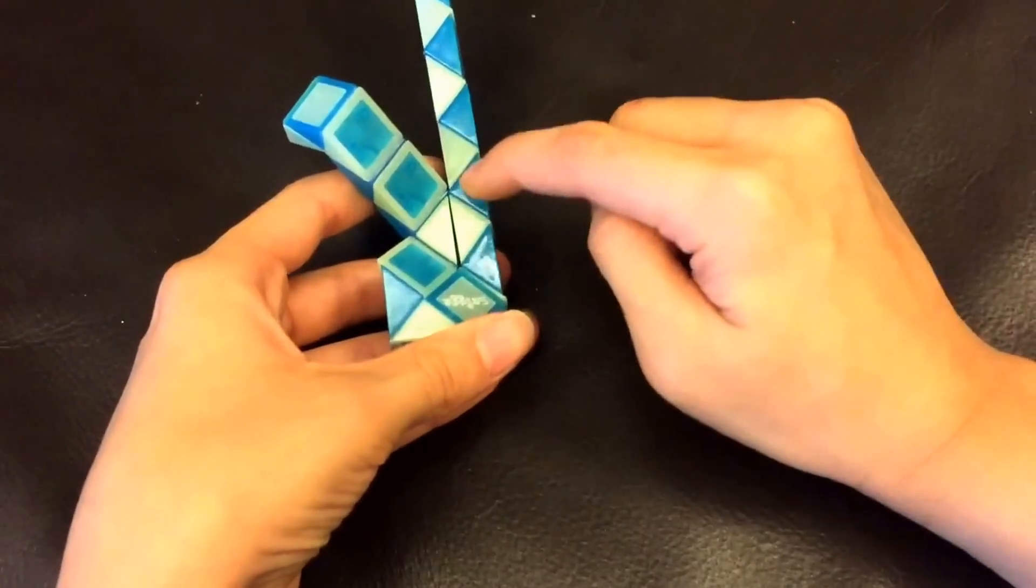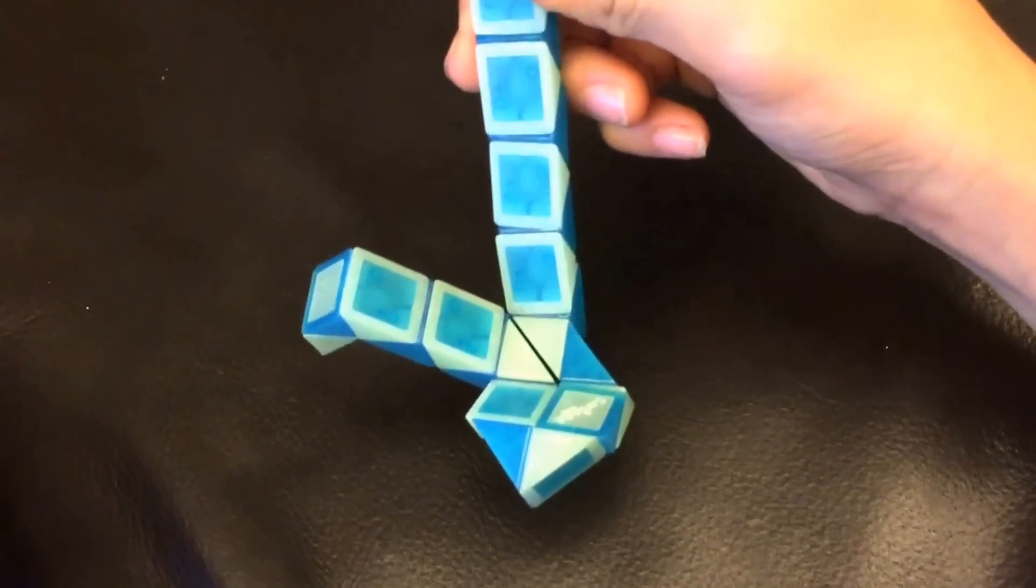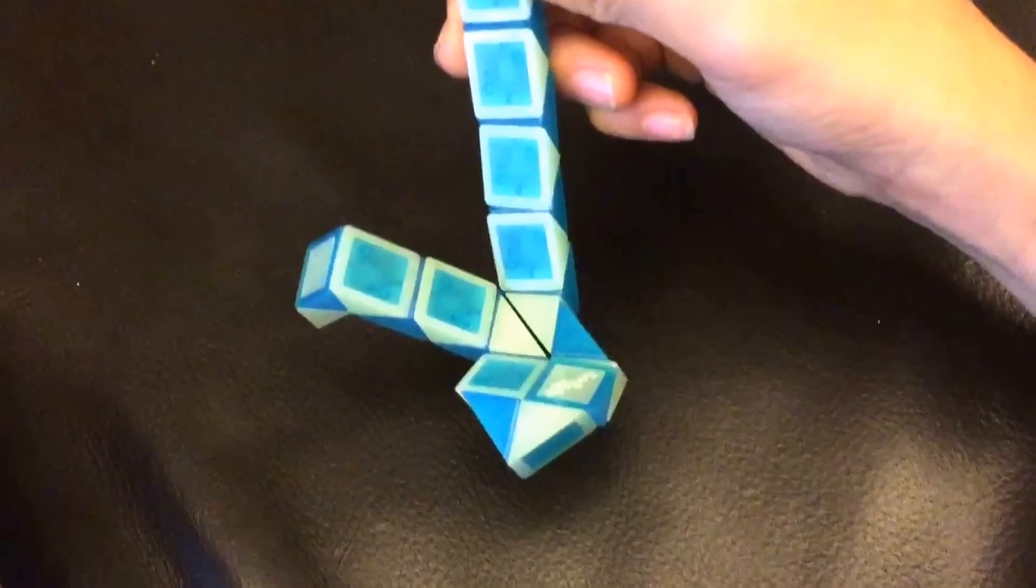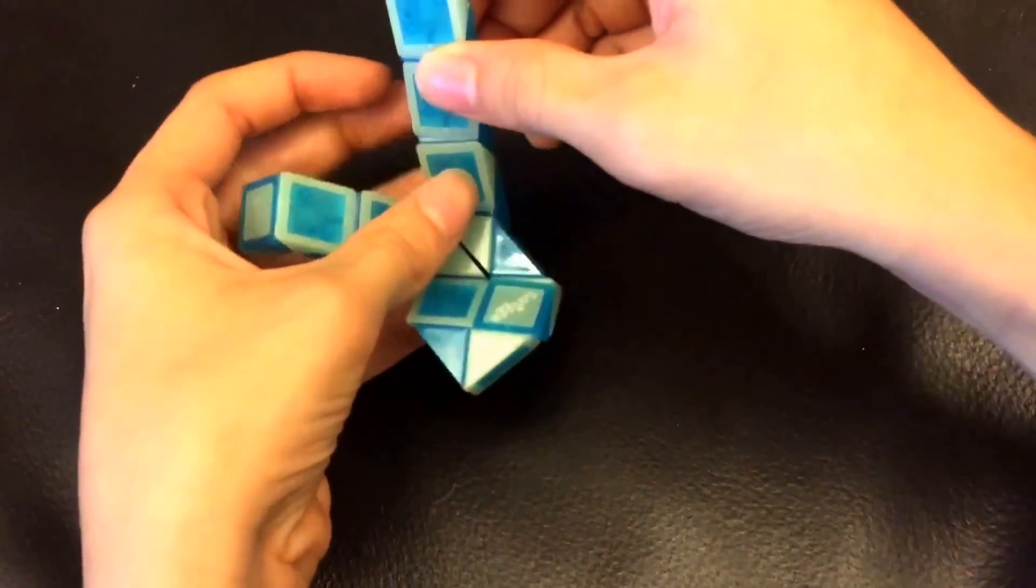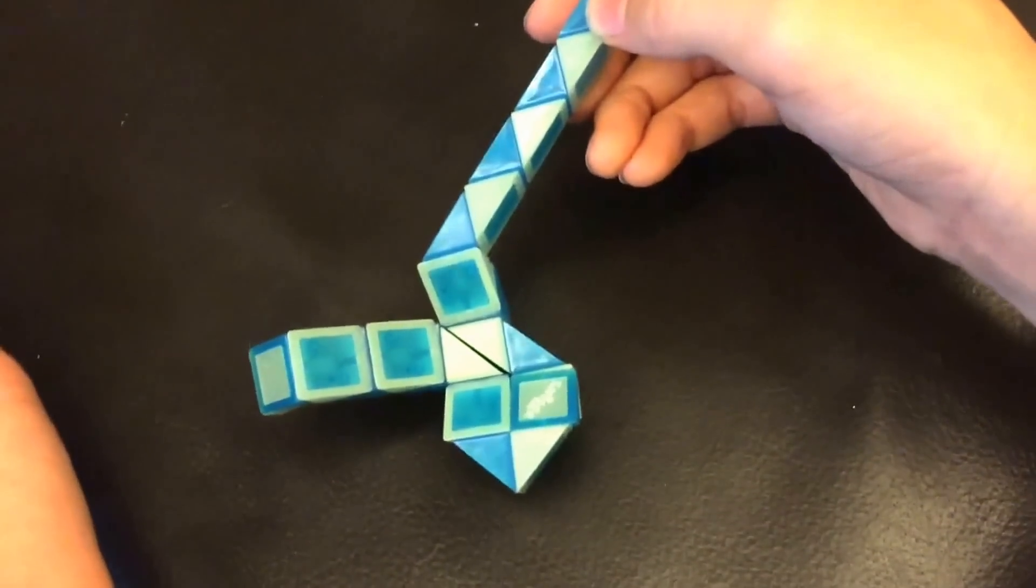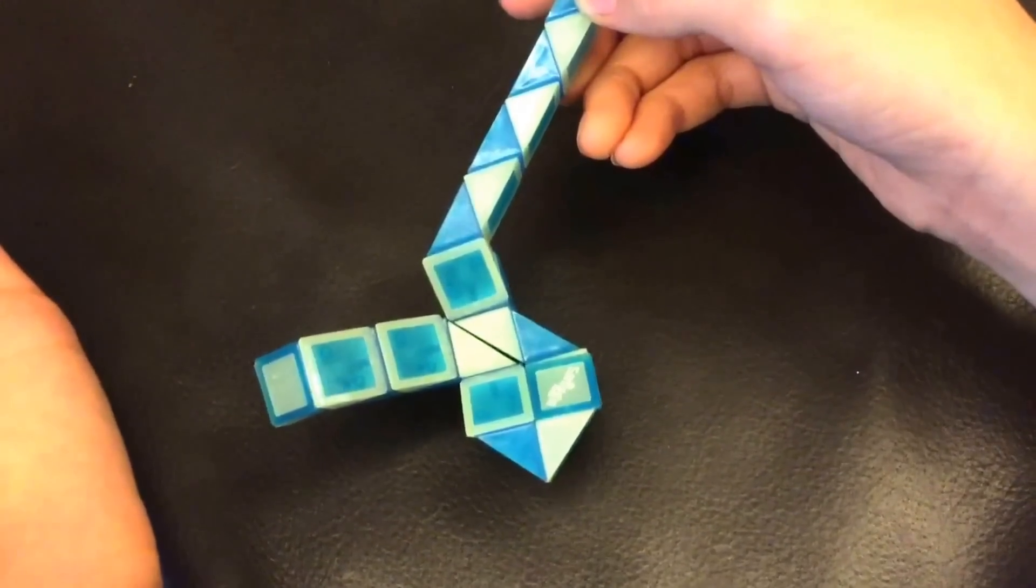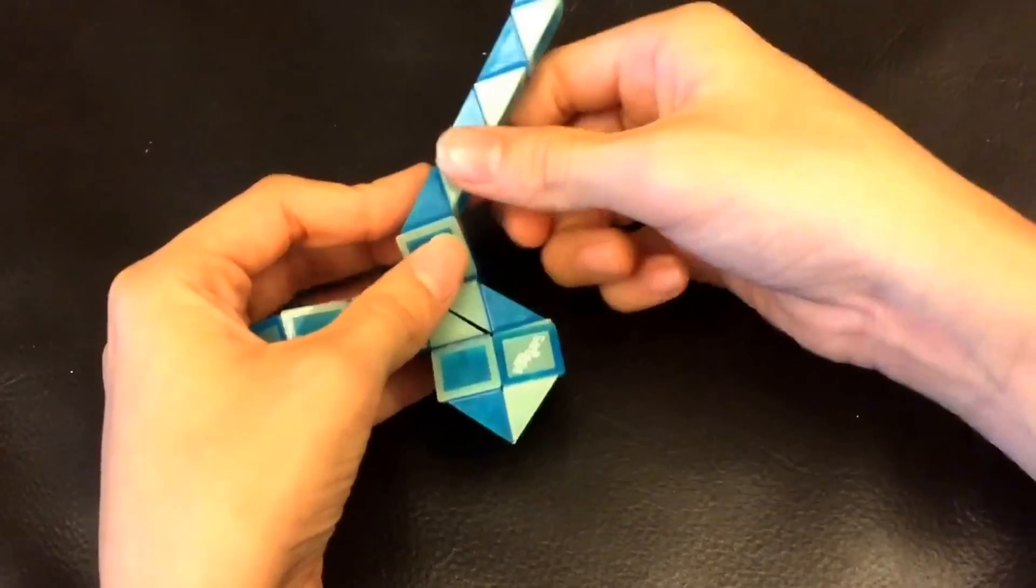Now this blue one is going to go up. And then this blue one is going to go right. Then this white one is going to go towards you.